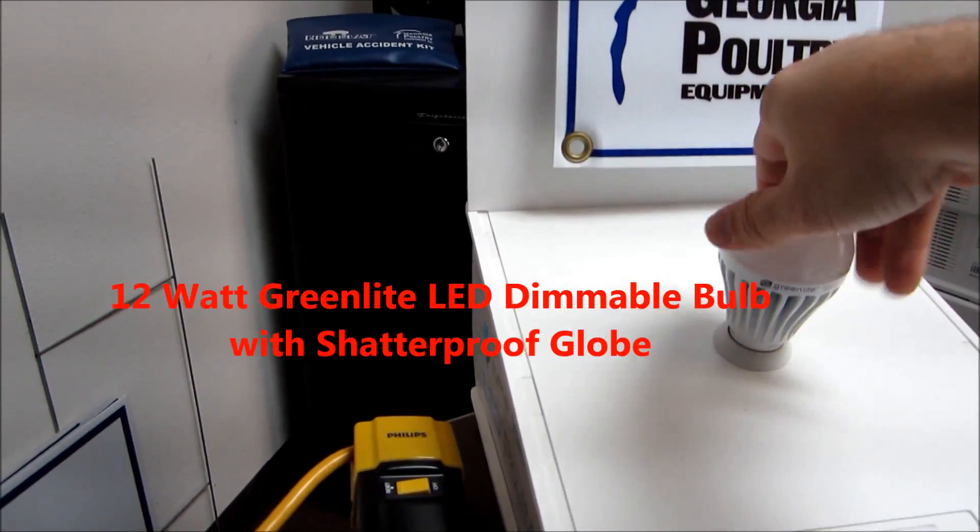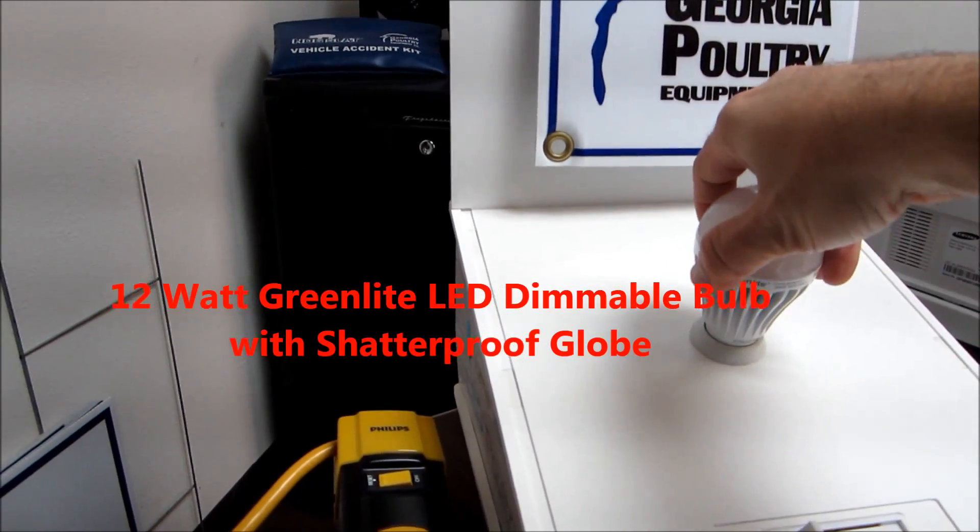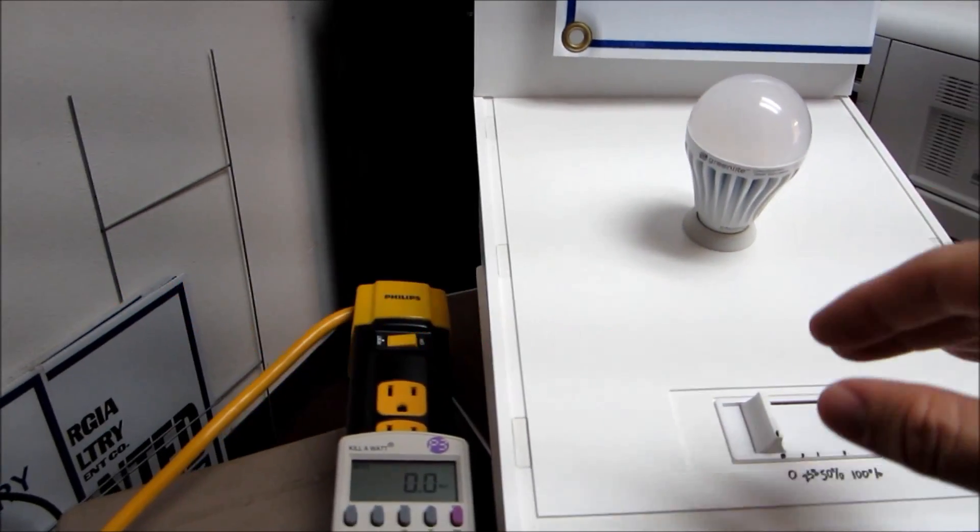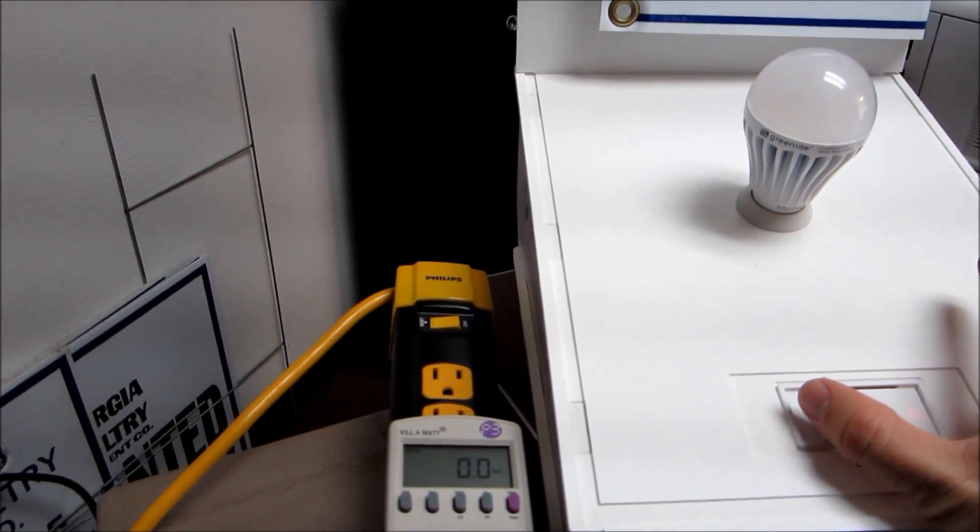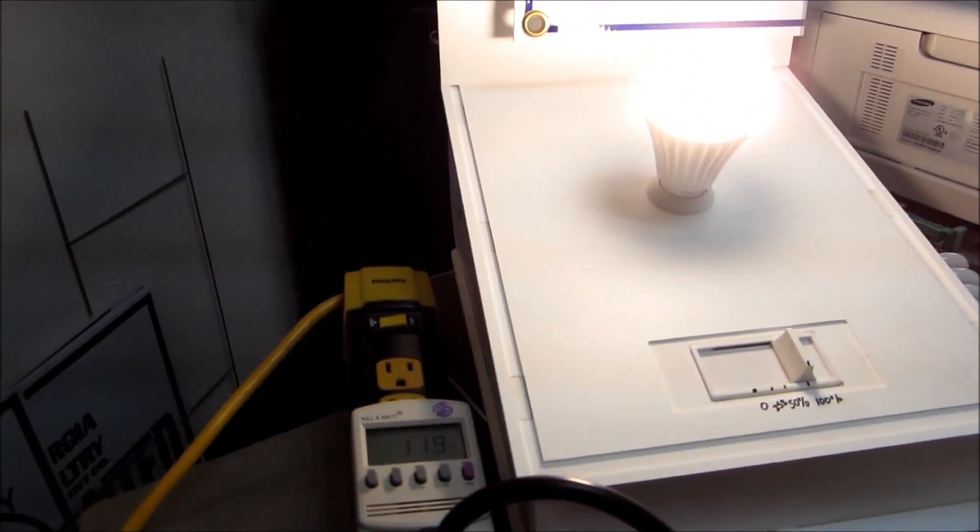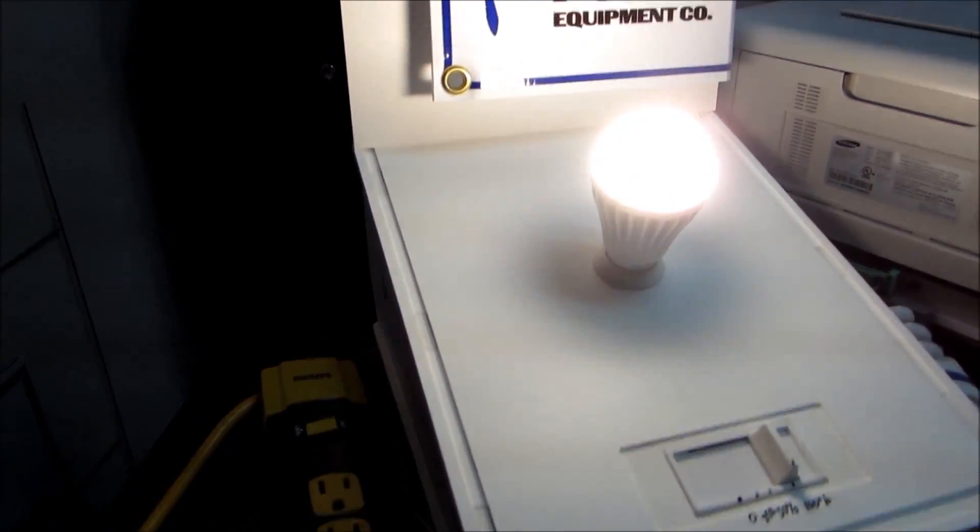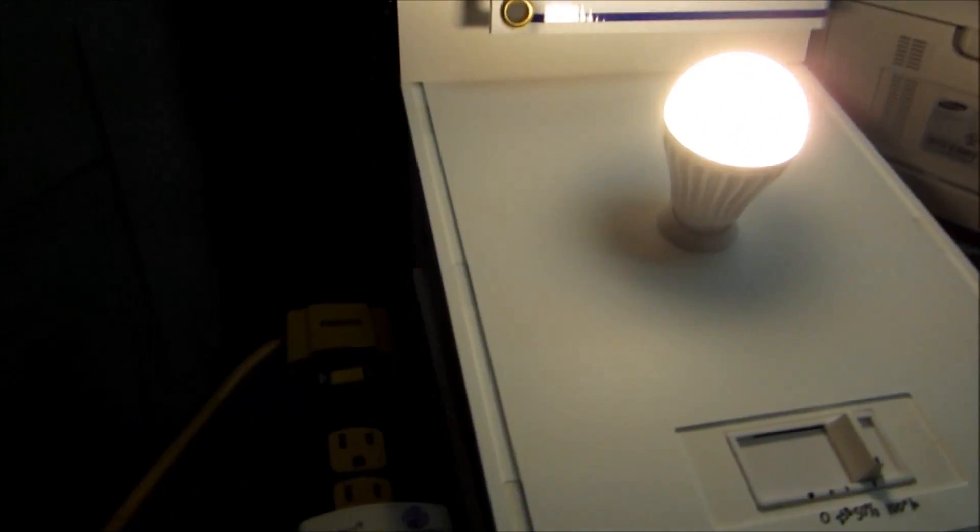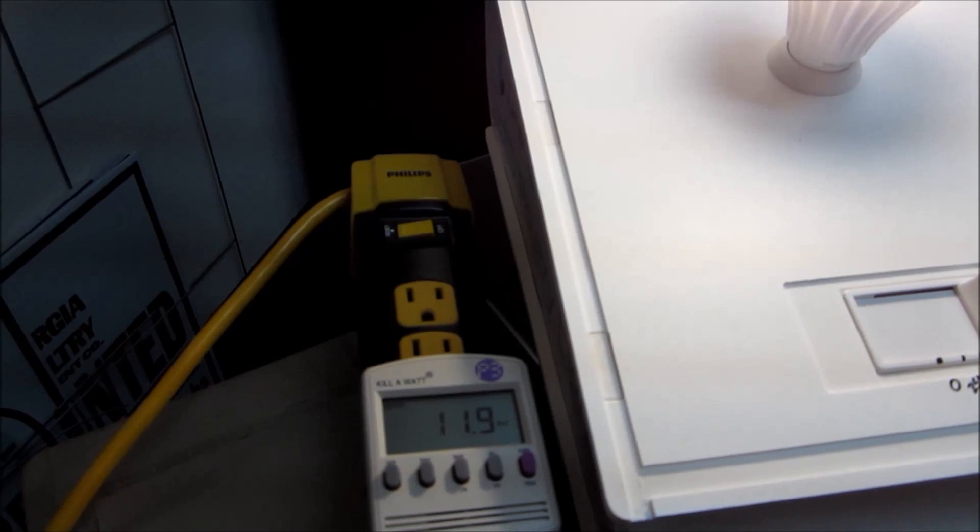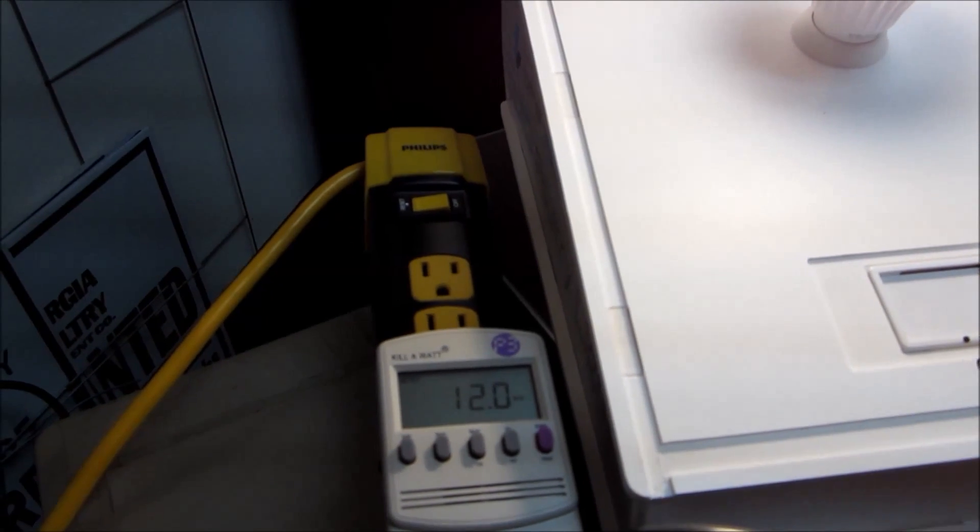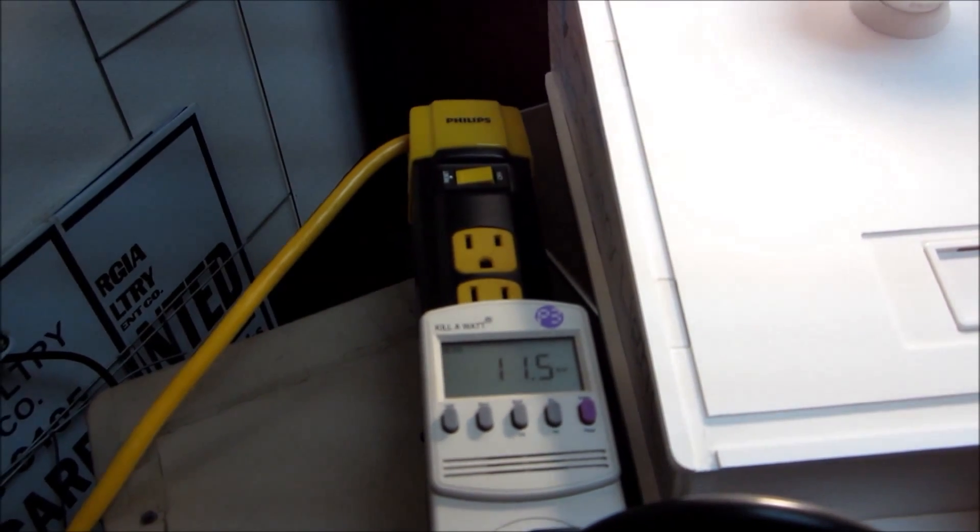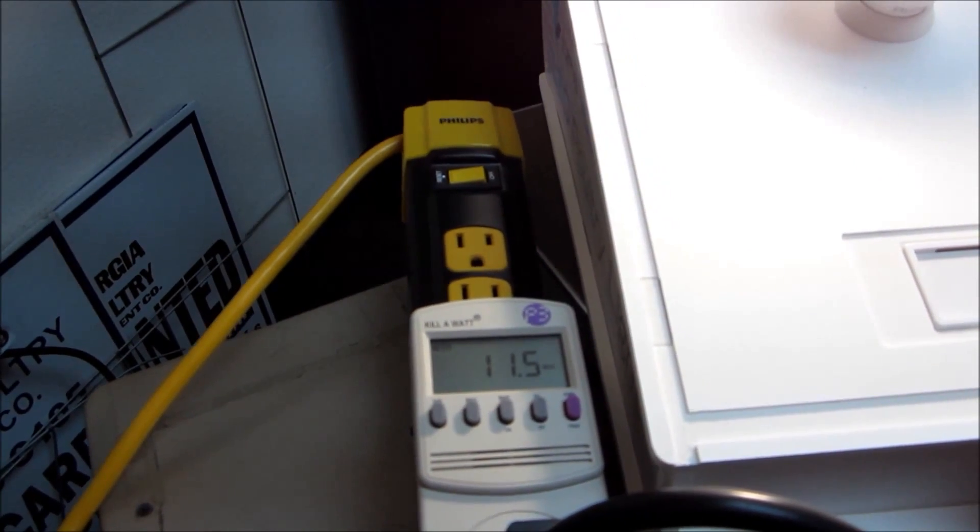Next we have a 12 watt green light LED bulb. This is a brand new bulb. It is rated 100 watt equivalent incandescent and as you can see it is mighty bright. It is one of the brightest LED bulbs that we sell at Georgia Poultry and also comes with a 3 year warranty. But it cannot be put in enclosed globes or anything like that. And as you can see it is roughly using like it says 12 watts of electricity. It variates up or down from 11 to 13 but on average 12.